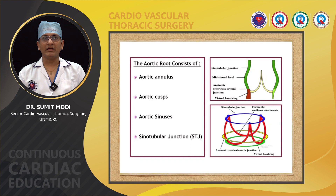The aortic annulus has two parts: one is the virtual basal ring and the second is the anatomic ventricular-arterial junction. The aortic root sinuses are crown-shaped and have three projections.